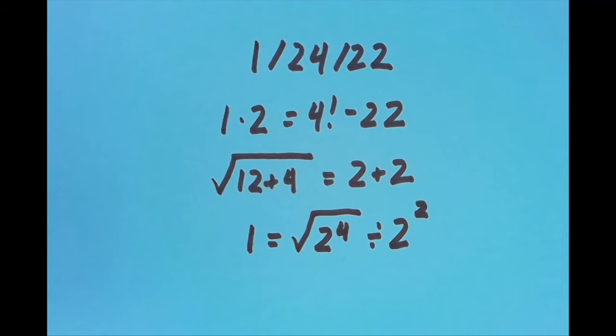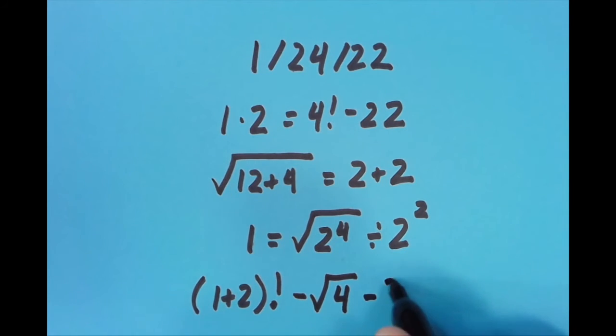And the last thing I did, I used another factorial here. I did the quantity 1 plus 2 factorial, so that's going to give us 3 factorial—3 times 2 times 1, which is 6. So that's 6 minus the square root of 4 minus 2, so this is 6 minus 2 minus 2, which equals 2.